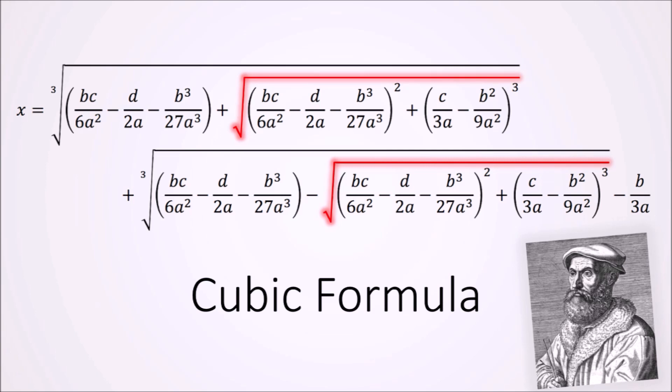And that's why Rafael Bombelli introduced imaginary numbers in his book Algebra in 1572. With these numbers, Bombelli was able to solve the problem with Tartaglia's formula.